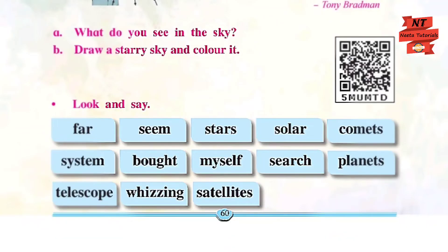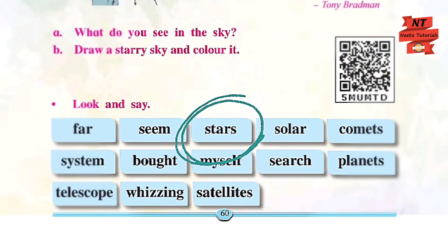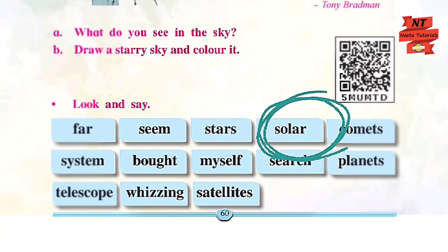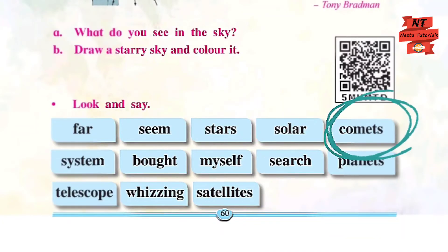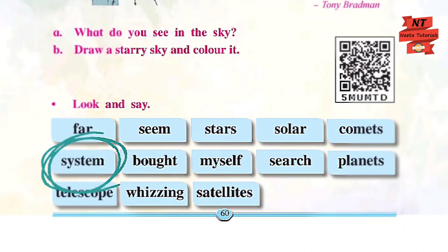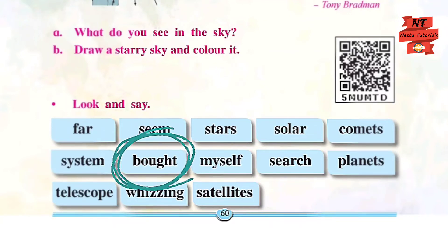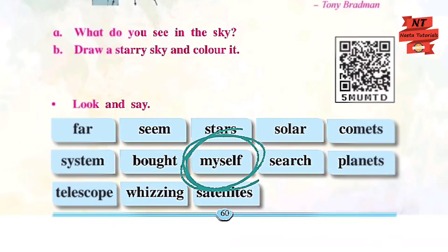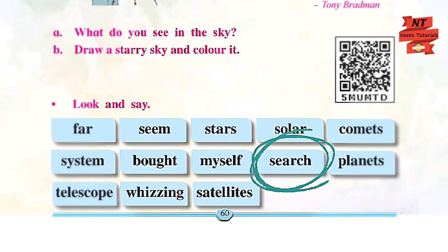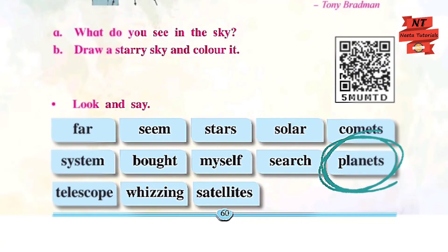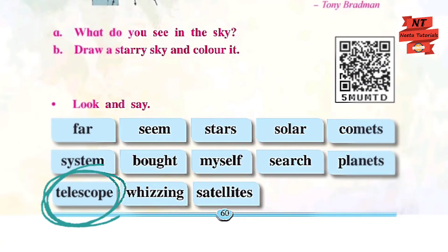Now let's read the vocabulary words from the poem: far, seem, stars, solar, comets, system, bought, myself, search, planets, telescope, whizzing, satellites. These are the key words from the poetry.